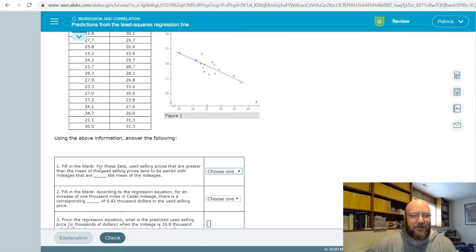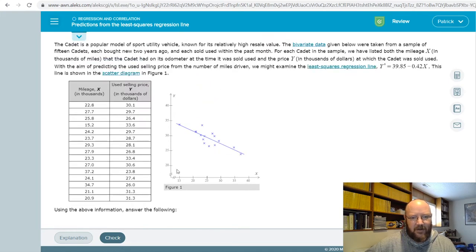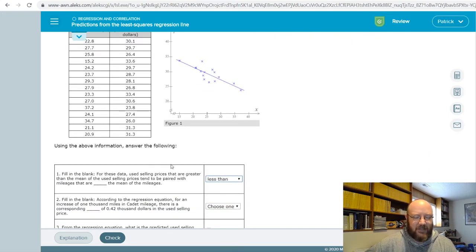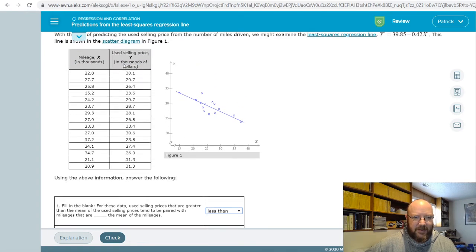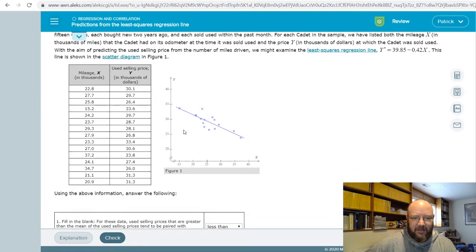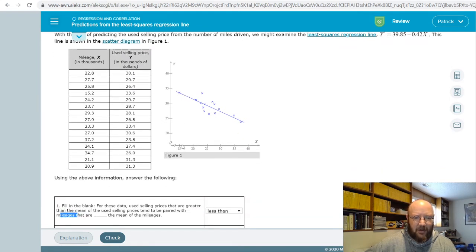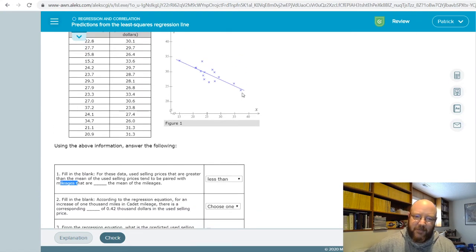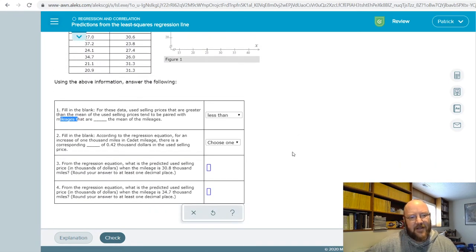So some of these answers will be a little bit different. Fill in the blank. For these data, use selling prices that are greater than the mean, so higher than, tend to be paired with mileages that are lower than. So it's going to be the opposite, less than. So, and look at this closely. Use selling prices. So use selling prices is our y-axis. So when they are higher, when they are up here, they are associated with mileages, which is our x value, that are lower. So high y, low x on this one. And if you ever get confused on it, just pick out one of these data points and then look at where it would be. So like this one, very high x. It's up here in 36, 37-ish, but very low y. It's down here like 24 when most of the other y values are higher than that. So hopefully that helps.